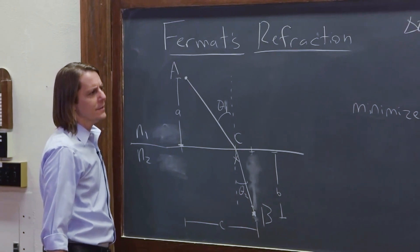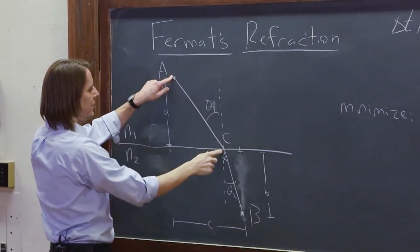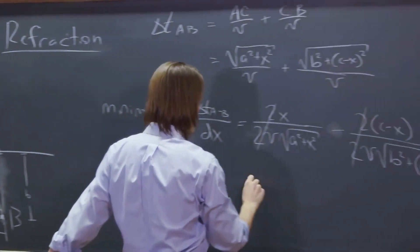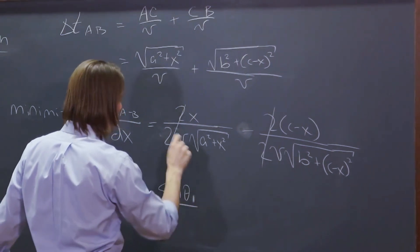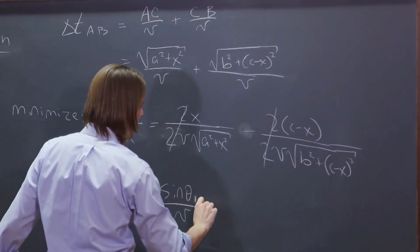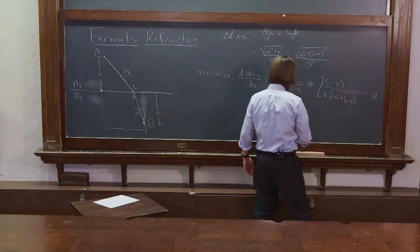Let's see, X over the square root of A squared plus X squared. If this is the angle, this is X, and this is square root of A squared plus X squared. So that's, again, sine theta 1 over V. And this is equal to 0, so these two things are equal.